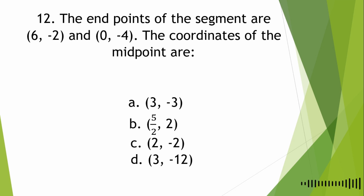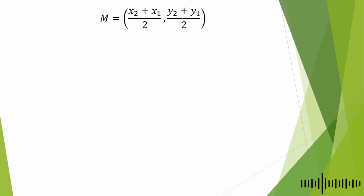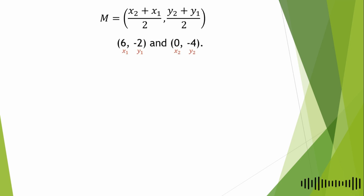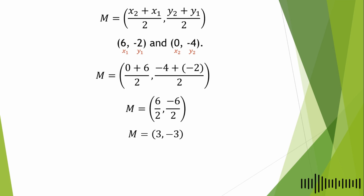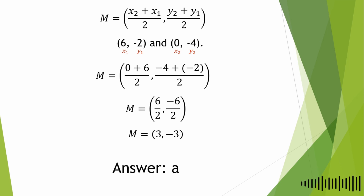For the 12th question: the endpoints of the segment are (6, −2) and (0, −4). Find the coordinates of the midpoint. A. (3, −3), B. (5/2, 2), C. (2, −2), D. (3, −12). Using the midpoint formula: M = ((x₁ + x₂)/2, (y₁ + y₂)/2). Substituting: M = ((6 + 0)/2, (−2 + (−4))/2) = (6/2, −6/2) = (3, −3). The answer is letter A.